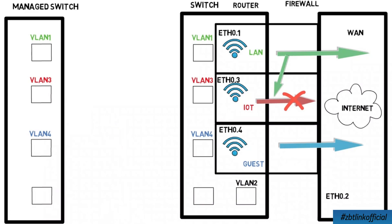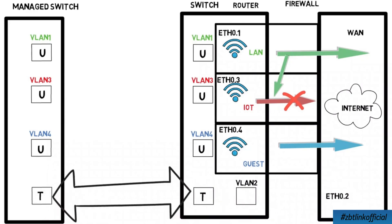If I connect a PC to the green port, it would receive an IP address from the LAN interface and be assigned to the right firewall zone. If I connect to the other port, it would be in the IoT zone. You do not need a router to do this — a managed switch can do exactly the same thing. It can map ethernet ports to VLANs. You can only have one VLAN per switch port, which is logical because you can only connect one device to it and the device doesn't know about VLANs.